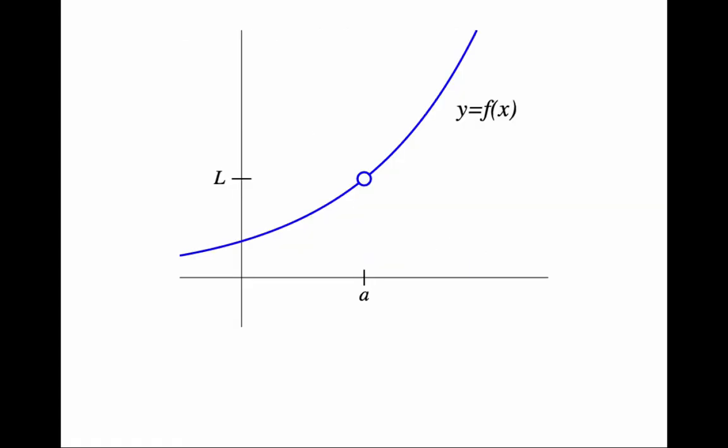However, this example is different. The function in this graph has a limit as x approaches a, but it has a hole because the function is undefined. On the other hand, this function has a limit as x approaches a, and it is defined at a.